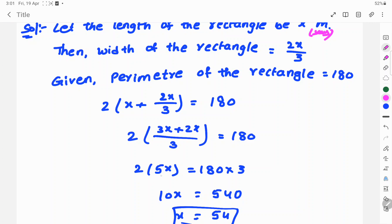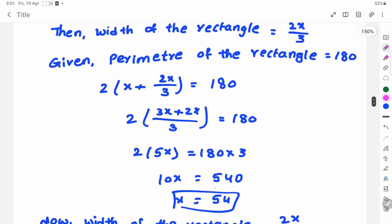So, 2 into 5 is 10. Then x is equal to 3 into 180 is 540.